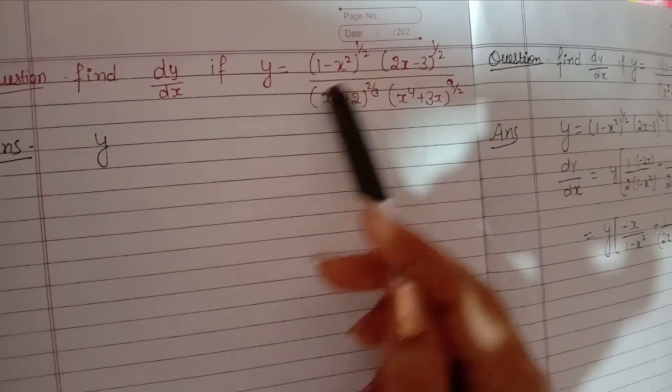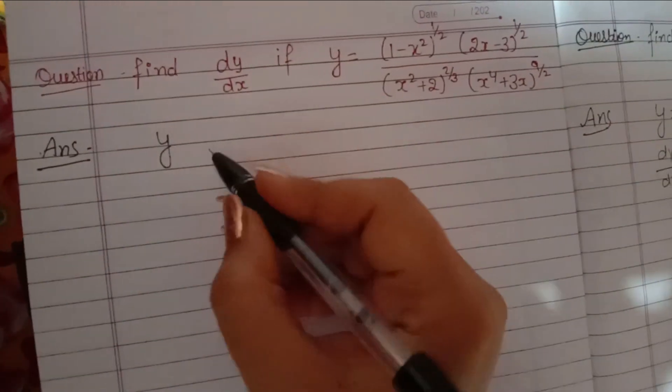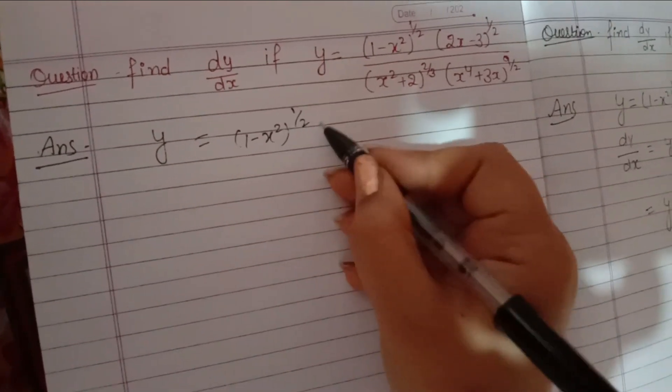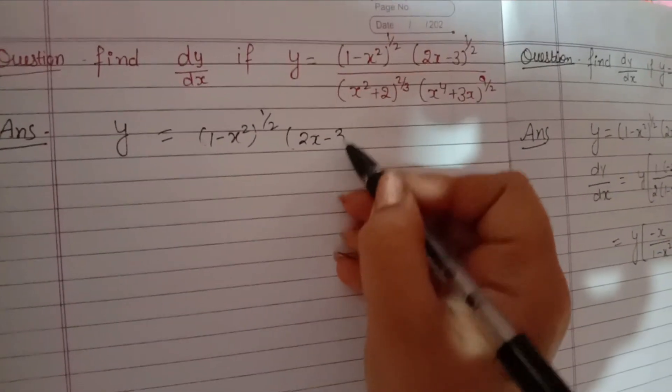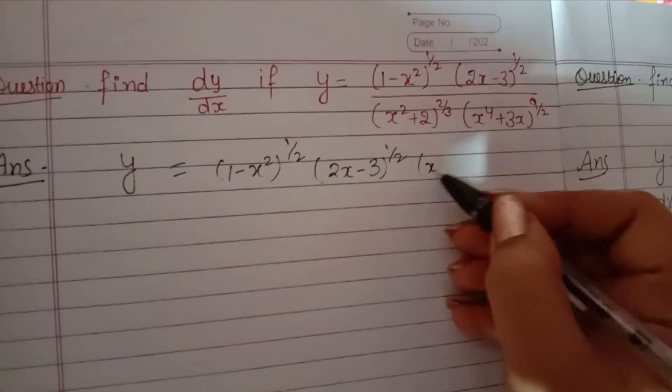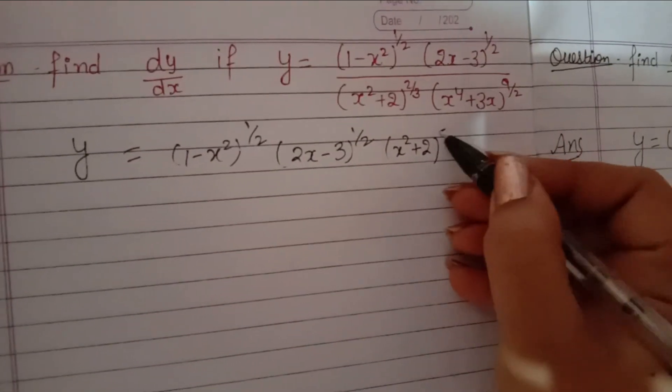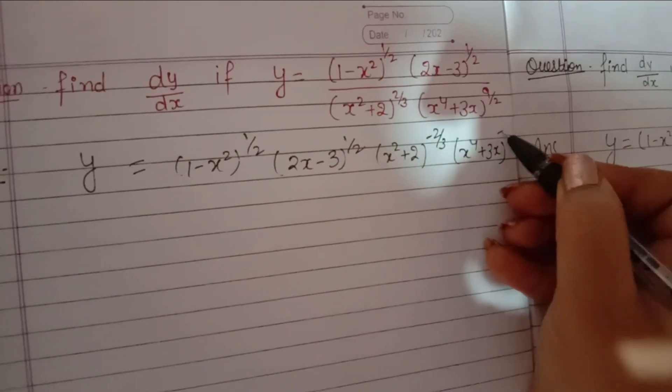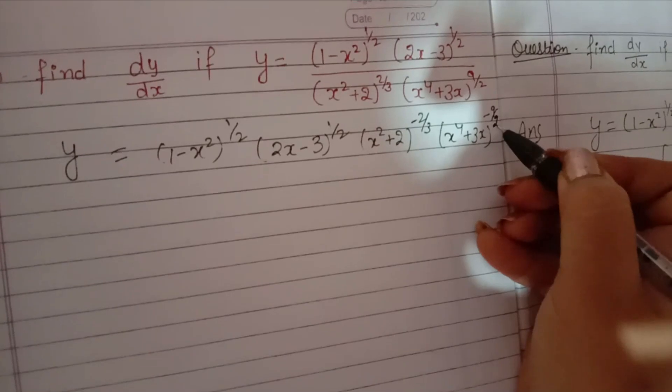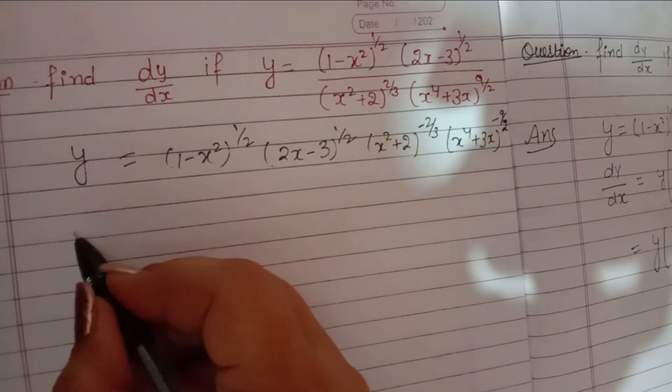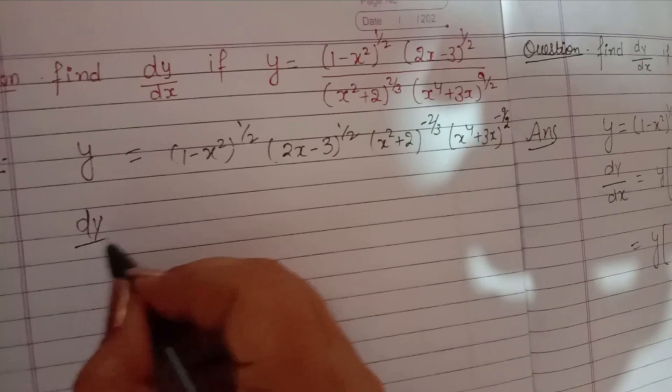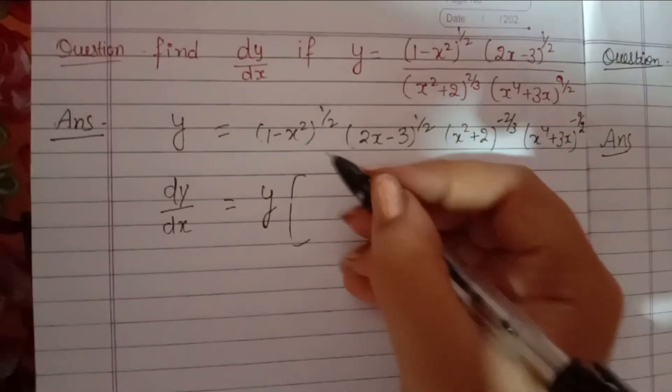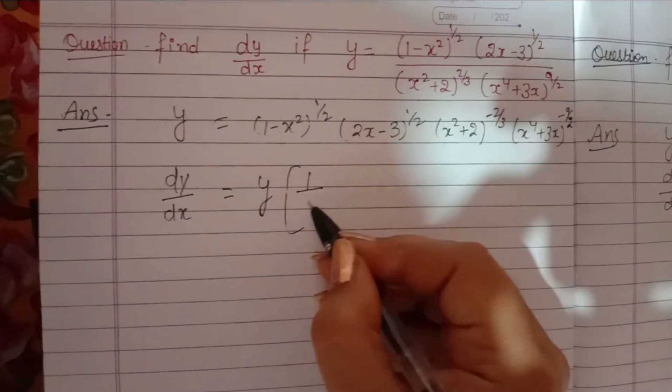we will write all the power of denominator. The power x square plus 2 minus 2 by 3, x to the 4 plus 3x the power minus 9 by 2.